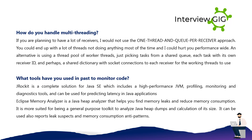What tools have you used in PaaS to monitor code? DROKit is a complete solution for Java SE which includes a high-performance JVM, profiling, monitoring and diagnostics tools, and can be used for predicting latency in Java applications. Eclipse Memory Analyzer is a Java heap analyzer that helps you find memory leaks and reduce memory consumption. It is more suited as a general-purpose toolkit to analyze Java heap dumps and calculate their size, and can also report leak suspects and memory consumption anti-patterns.